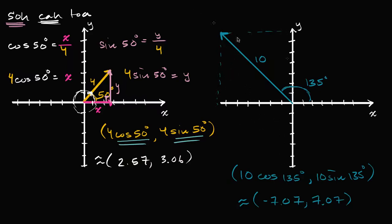How does this work? If I had a unit circle and a unit vector going in the exact same direction — still forming 135 degrees — that point on the unit circle would have coordinates cosine of 135 degrees and sine of 135 degrees. So for that unit vector, the x-component is cosine of 135 and the y-component is sine of 135. The vector we care about has 10 times the magnitude, so its x-component and y-component are each 10 times bigger.